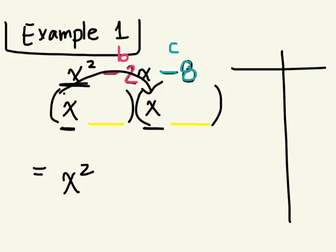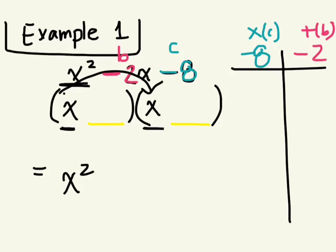We're looking for two numbers that multiply together to give us C. What's C in this question? Negative 8. So we're going to be listing the factors of negative 8 — two things that you can multiply together to give you negative 8. And the two numbers that you multiply together have to add up to B, which is negative 2.